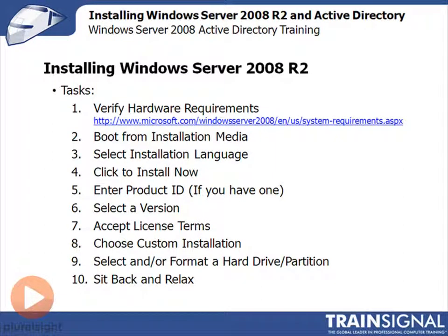The first step to installing Active Directory is you have to have a Windows Server operating system. In this case, we're going to go with Windows Server 2008 R2. On the screen, I have some steps listed that you have to go through when installing Windows Server 2008 R2.